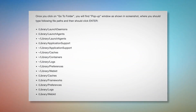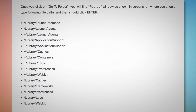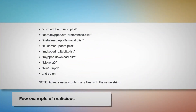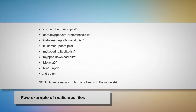In the pop-up window, type the following file paths and press Enter. Enter paths such as /Library/LaunchDaemons, /Library/LaunchAgents, /Library/Application Support, and so on, as shown here. Look for suspicious or malicious files and move them to Trash. A few examples of such malicious files are shown on screen. Note: adware usually puts many files with the same string.